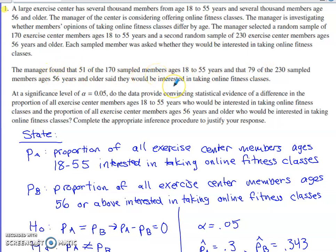They say at a significance level of 0.05 do we have convincing evidence of a difference in the proportion of all exercise center members ages 18 to 55 who would be interested in taking online fitness classes and the proportion of exercise members age 56 and up who would be interested in taking the online classes. Complete the appropriate inference procedure, justify your response. I'm going to explain my State-Plan-Do-Conclude process here.